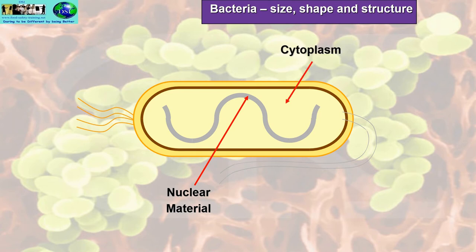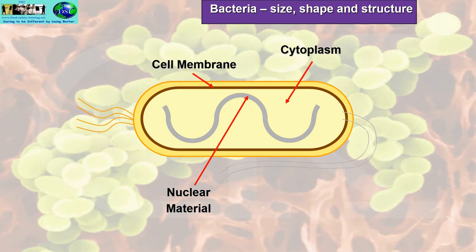We've got the cytoplasm — this is the liquid part of the bacterial cell. This is where all the action goes on: food is taken in, dissolved, used as nutrients, and expelled as waste material. The cell membrane is semi-permeable, controlling what is allowed across it and what is expelled through it.